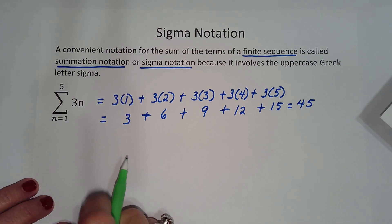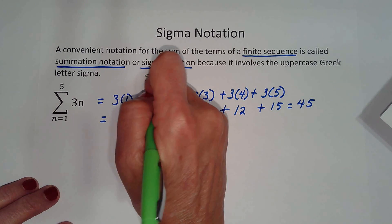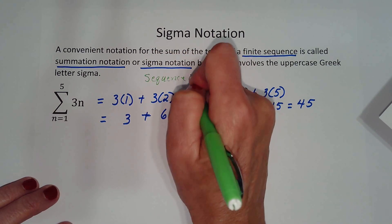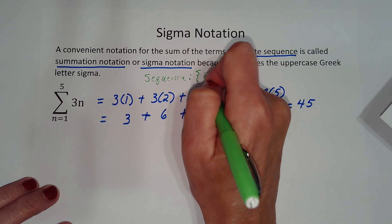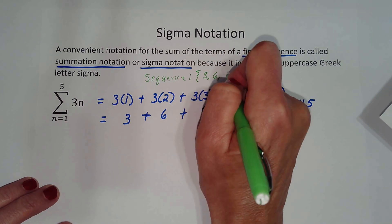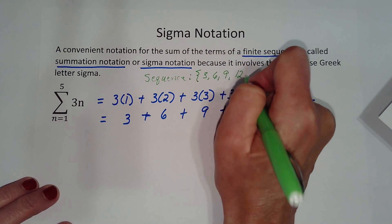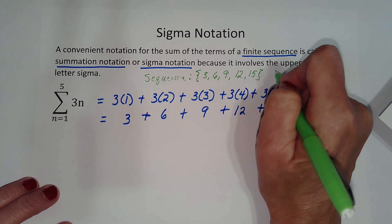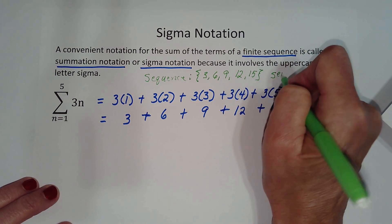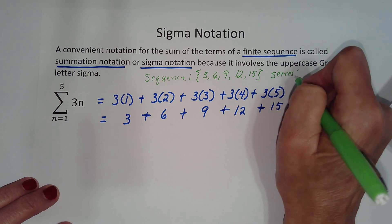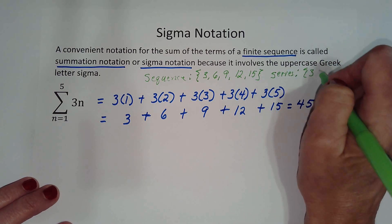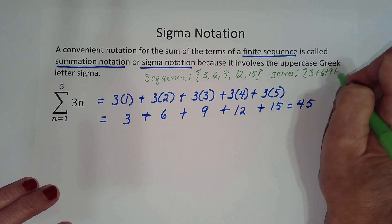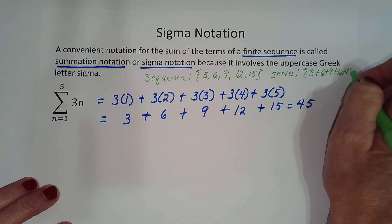So our sequence is 3, 6, 9, 12, and 15. And our series is 3 plus 6 plus 9 plus 12 plus 15.